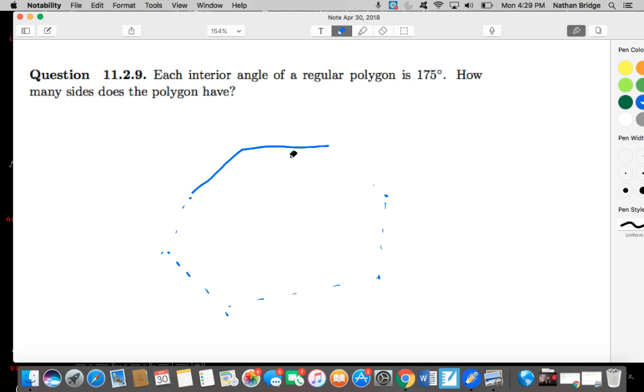We know that the interior angle of the polygon is 175. We know that the total sum of the interior angles is equal to 180 times N minus 2. This is the number of triangles, and this is the number of degrees in a triangle. But I don't really see how this is going to help us right here.